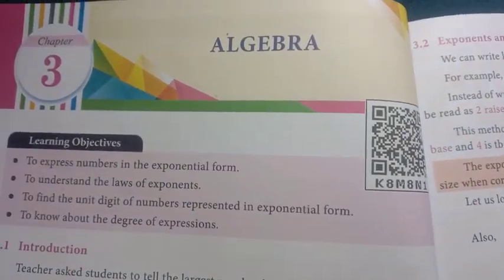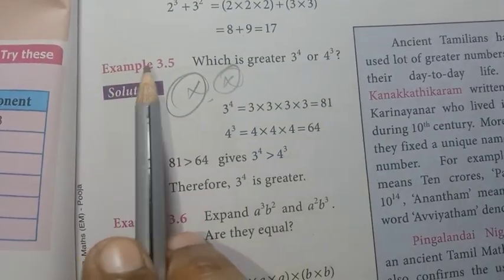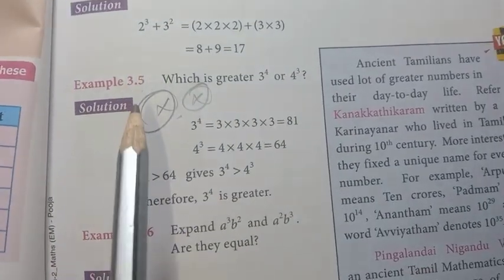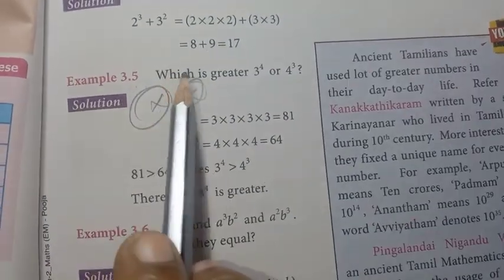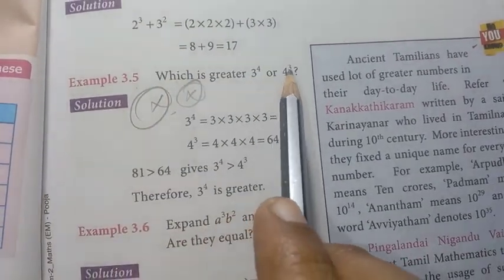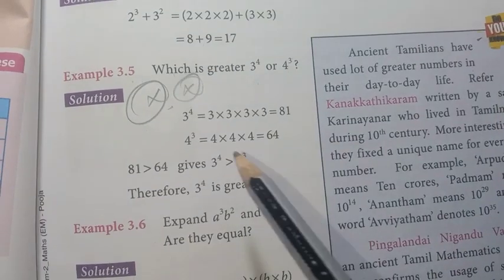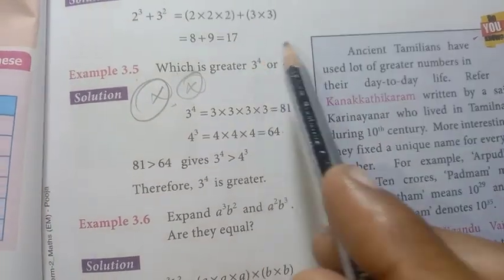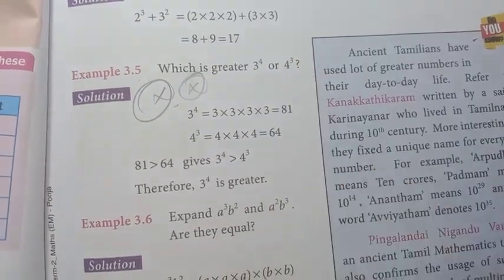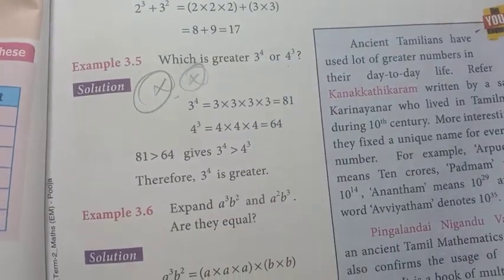This is the Algebra chapter, Chapter 3. Page number 45, Example 3.5 is repeated: which is greater — 3 to the power 4 or 4 to the power 3? This is a very important repeated question.